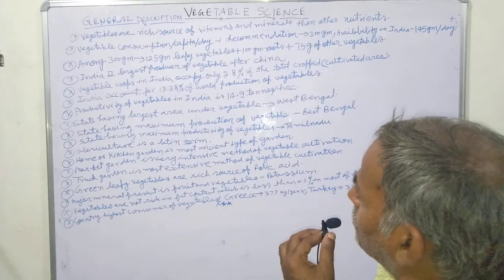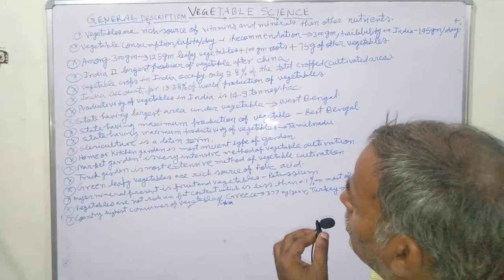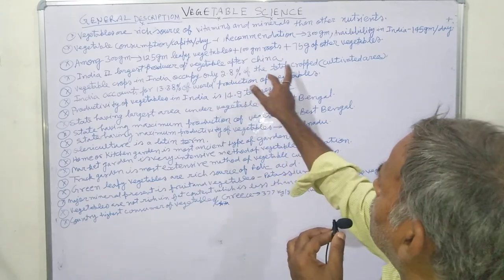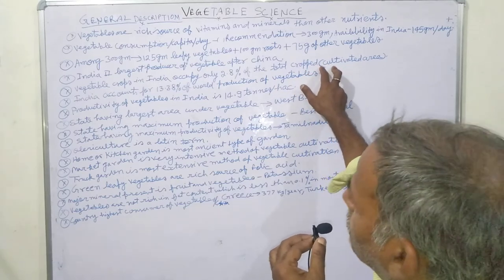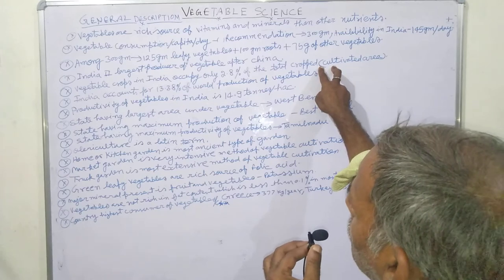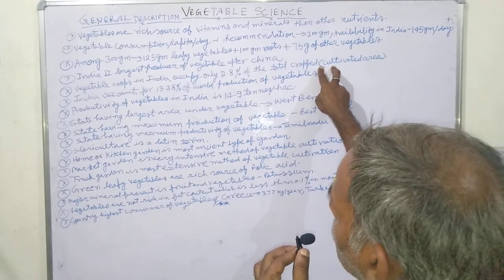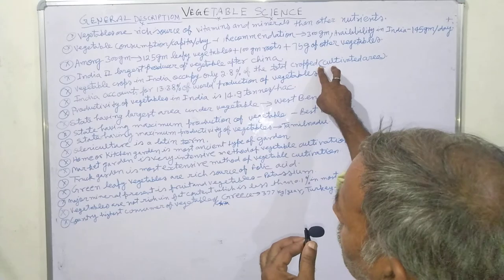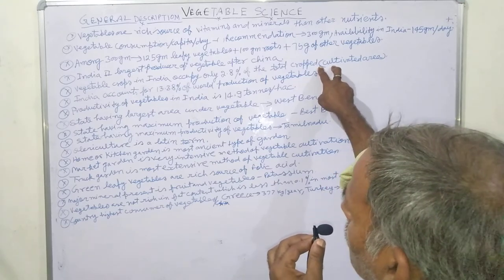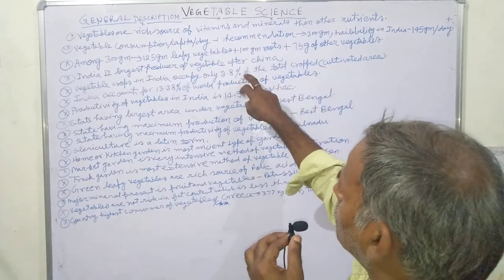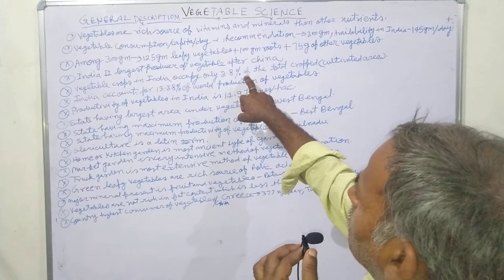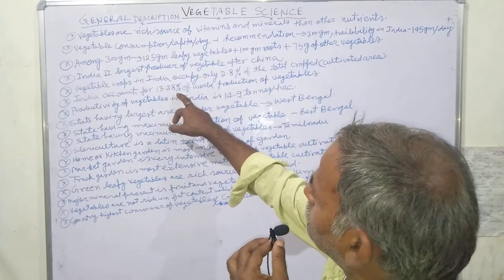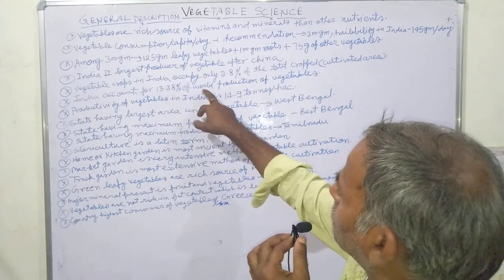India is the second largest producer of vegetables after China. Vegetable crops in India occupy only 2.8 percent of the total cultivated area. We have to increase the area under vegetables to feed our growing population. India accounts for 13.38% of world production of vegetables.